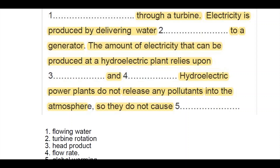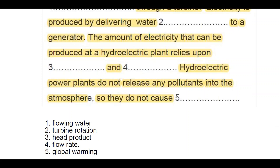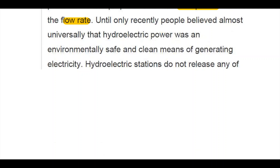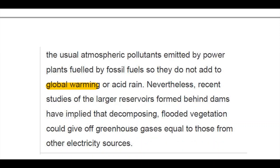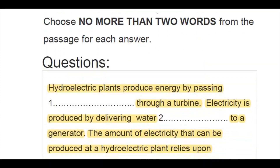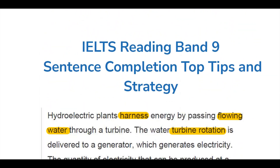The final question: 'Hydroelectric power plants do not release any pollutants into the atmosphere, so they do not cause something' — the answer is 'global warming.' The seventh line reads: 'Hydroelectric stations do not release any of the usual atmospheric pollutants emitted by power plants fueled by fossil fuels, so they do not add to global warming or acid rain.' So the answer is 'global warming.'